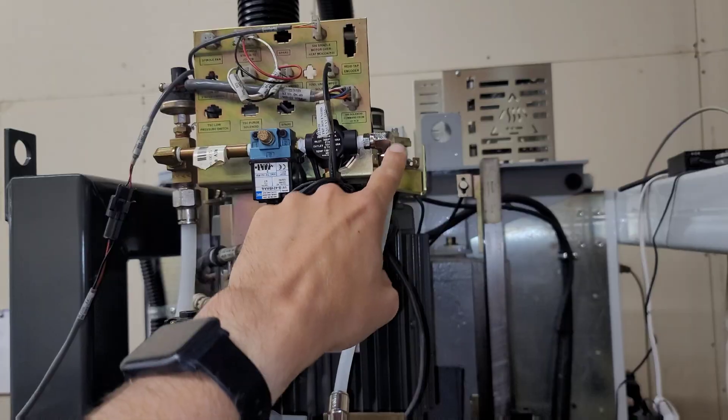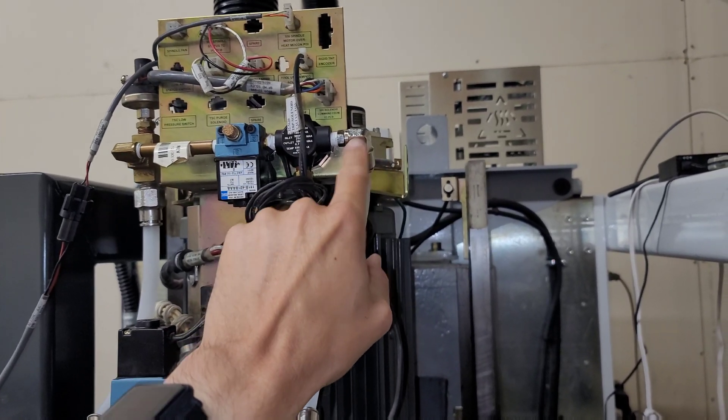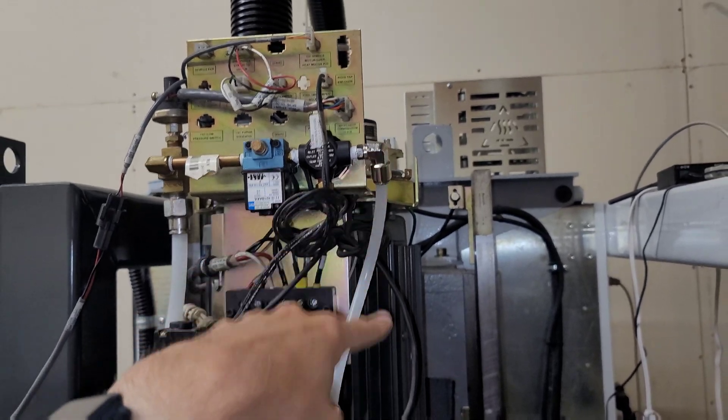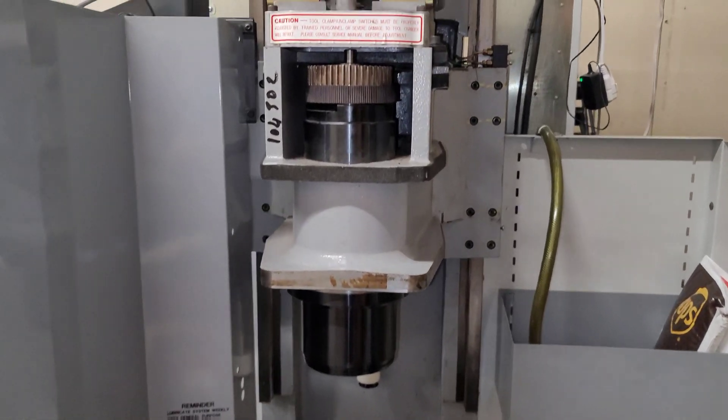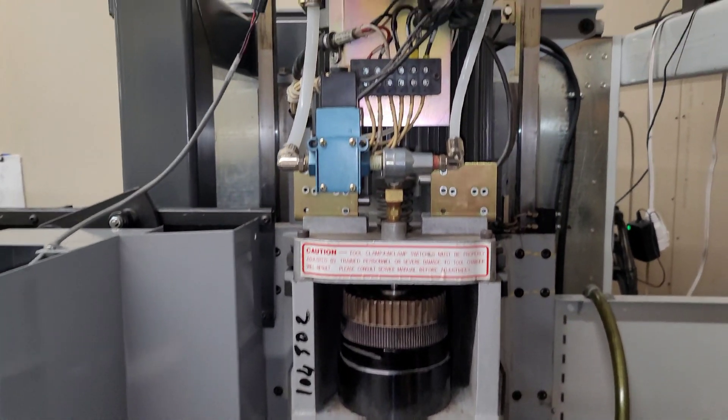We also found some black gunk up here, and where that black gunk came from was mysterious at first, but I figured it out and I'm going to talk about that later. So this is the spindle assembly with the cover removed.